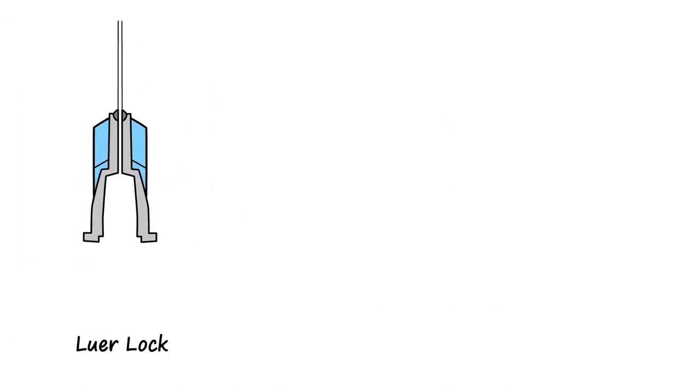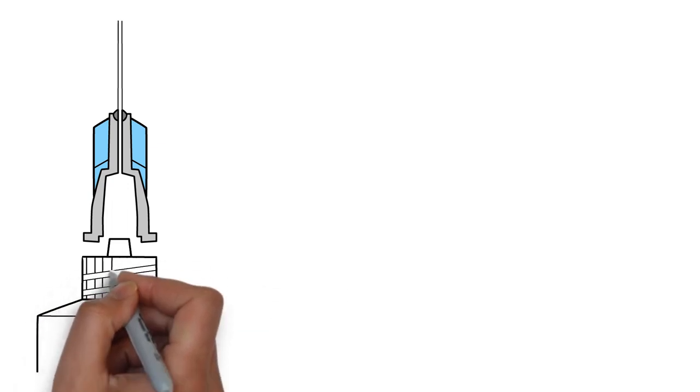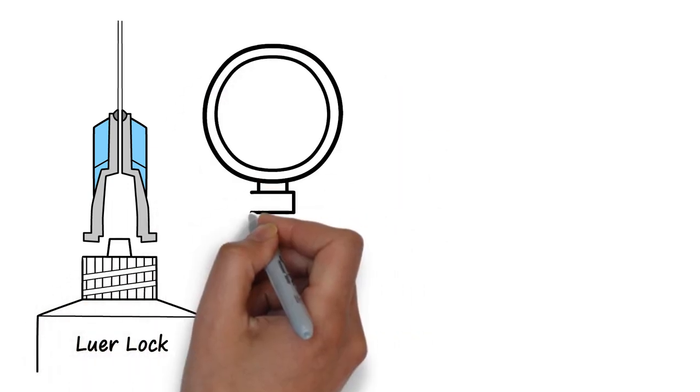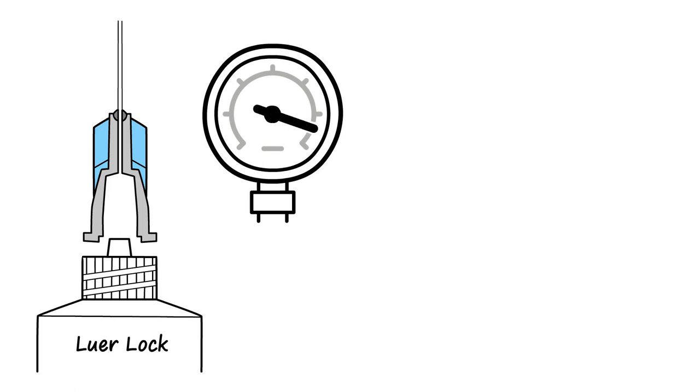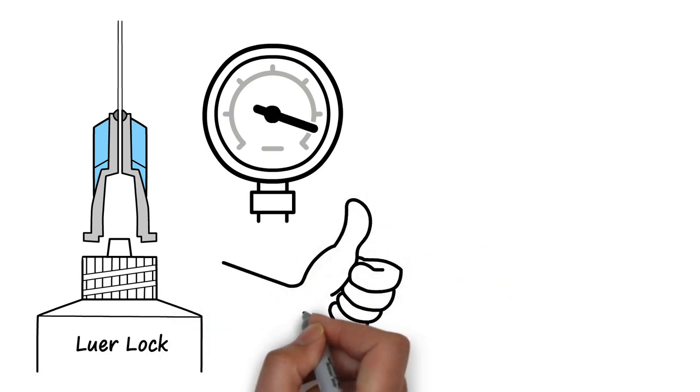The luer lock tip engages the hub of the needle with a threaded locking mechanism. This is ideal for applications which produce a higher amount of pressure or to provide an additional level of security to the user.